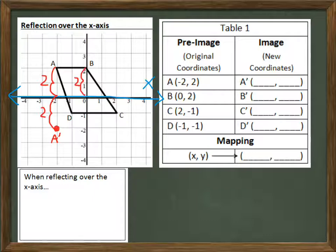B is also two units away from the axis, so I need to count two on the other side to find B prime. C is only one unit away from the axis. So its reflection, C prime, is on the other side by only one unit. D is also one unit away. So D prime is one unit away on the other side.